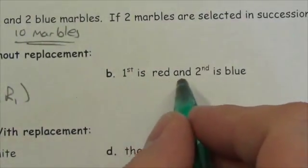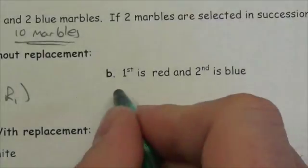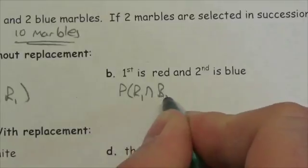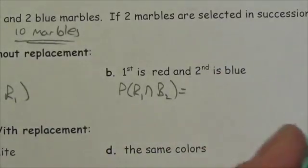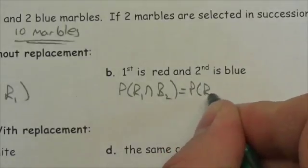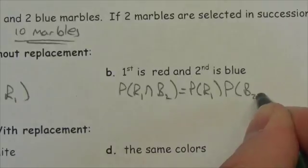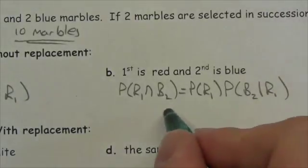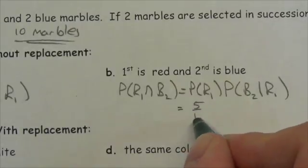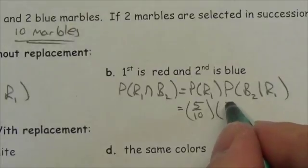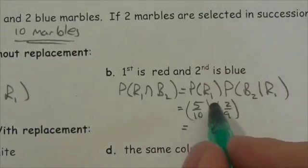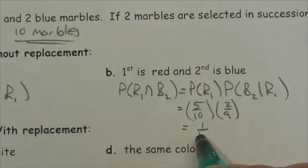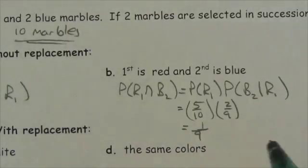What if the first is red and the second is blue? The probability of getting a red on the first and a blue on the second, without replacement — even though the number of blue marbles doesn't change, the total number of marbles does change. So it's the probability of red times the probability of blue given red was first. The probability of red is 5 out of 10; the probability of blue is 2 out of 9 — two blue marbles and only nine marbles total. Simplifying: 5 times 2 is 10, divided by 90 gives 1 out of 9.